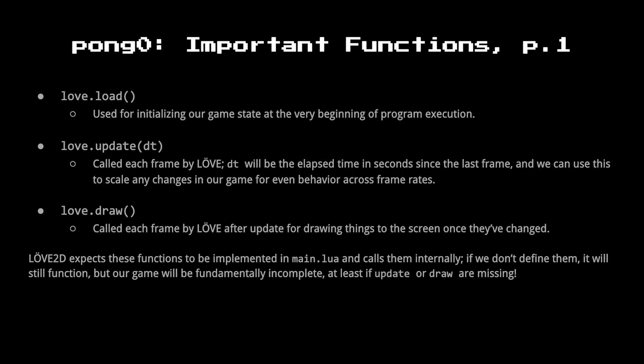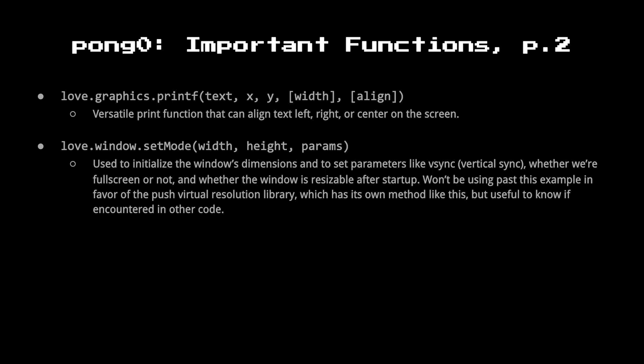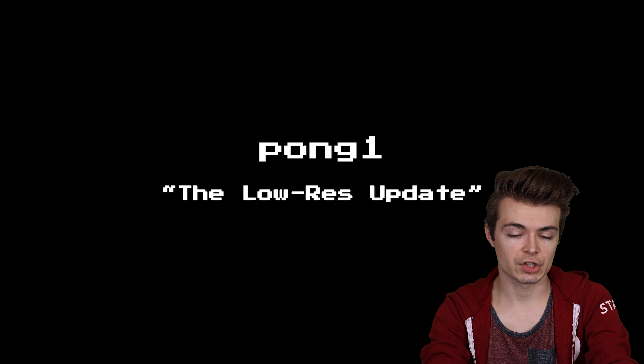love.draw is where you should place anything that draws something to the screen. Behind the scenes, Love will actually call love.draw after it calls love.update. A couple of functions less foundational but important to this iteration are love.graphics.printf, which is similar to print but, like C's printf, is customizable — you can choose different ways to style your text, such as centering it or right-aligning it. And love.window.setMode is how we get past a square window to having a 16 by 9 aspect ratio.